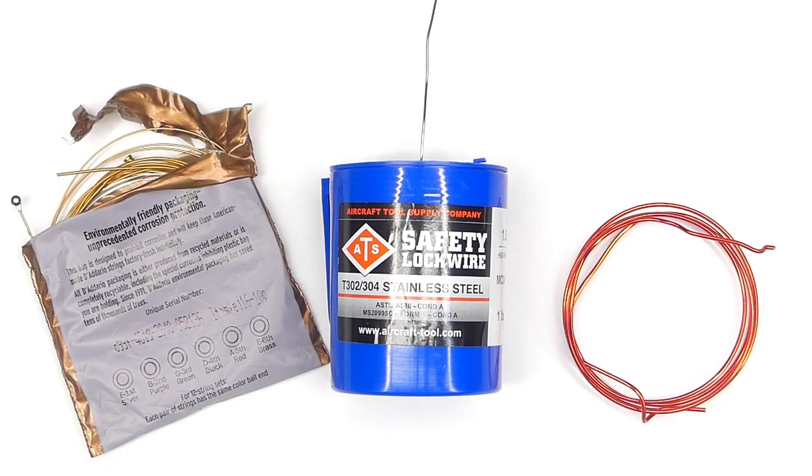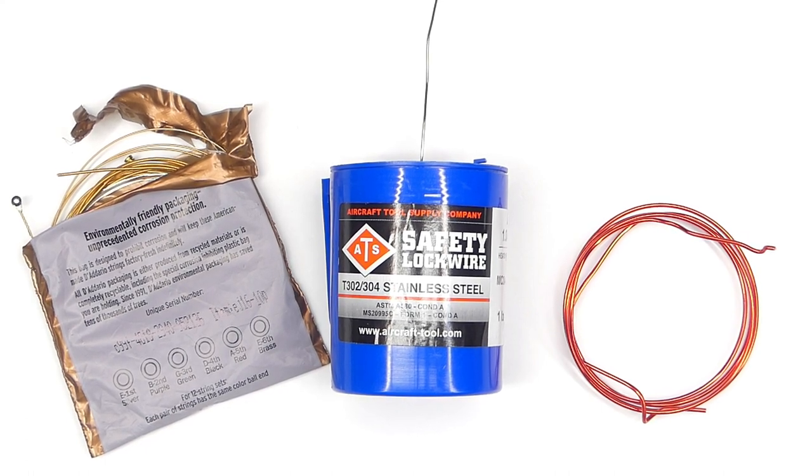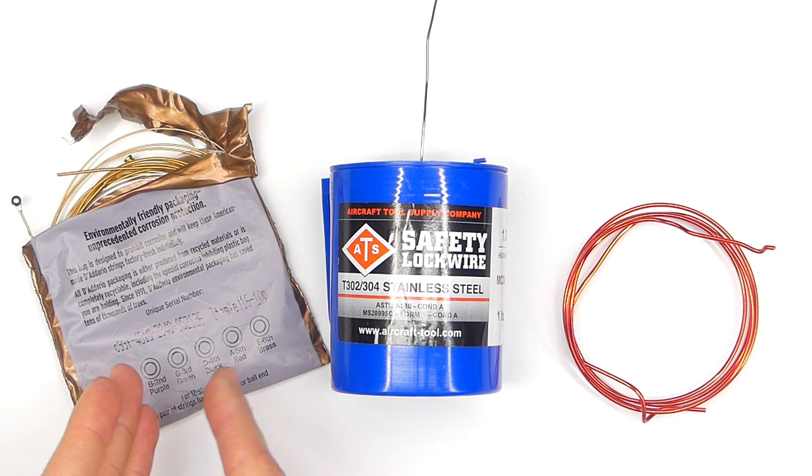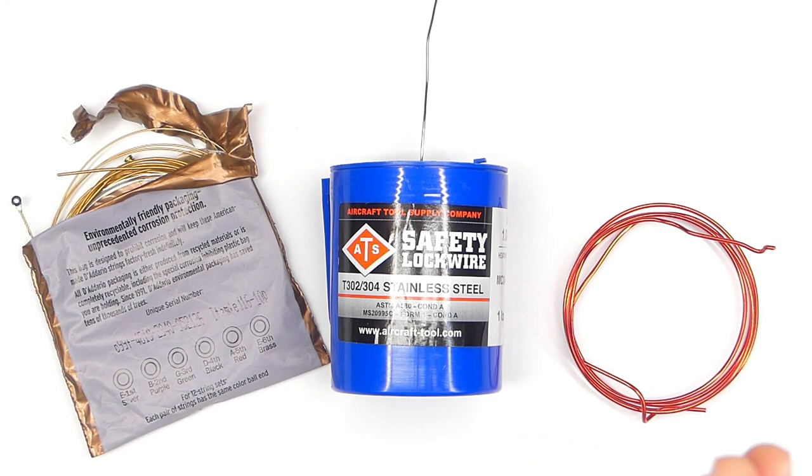There you go everybody, hope that was helpful. Now you have some ideas for some DIY control rod solutions. And if you have any other sort of creative solutions, let me know, leave me a comment below and let me know what you thought of these. Which one would you use? Would you go with the guitar string, with the safety wire, or with the Dollar Tree floral wire? I can tell you right now that I would go with the Dollar Tree floral wire. I'd give that a try first, see how that works out for you, because that's going to be the cheapest and most available method.